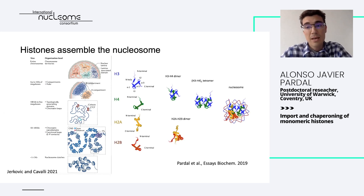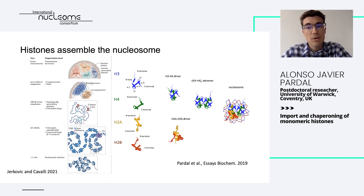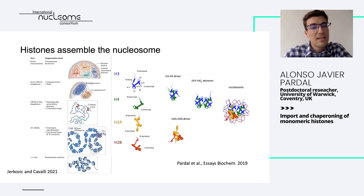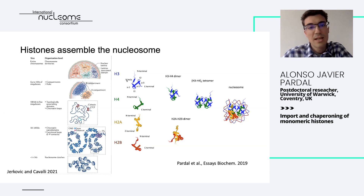Histones form the nucleosome, which is a histone octamer wrapped around approximately 150 DNA bases. Histones contain a globular core which forms the histone fold domain. This domain requires a dimerization partner to form. As we can see here in this cartoon, histone H3 dimerizes with histone H4, with the alpha-1, alpha-2, and alpha-3 helices labeled. Particularly for histone H3, it possesses one additional alpha helix termed the N-alpha helix, within the N-tail of the histone.